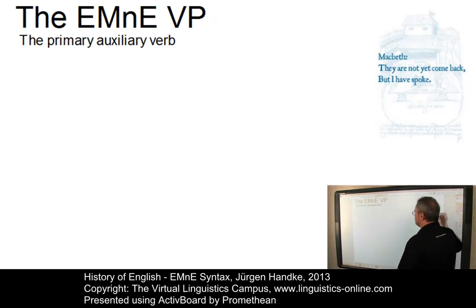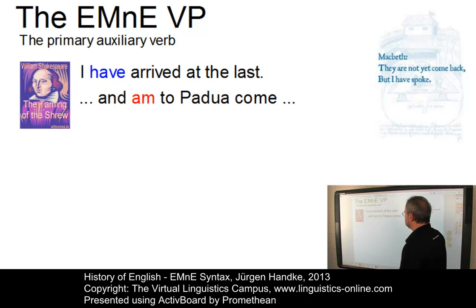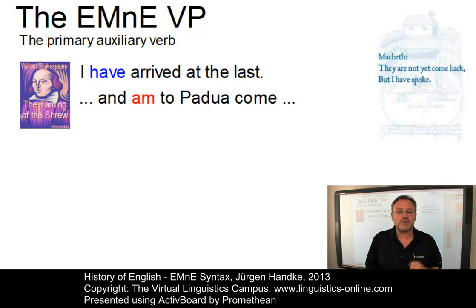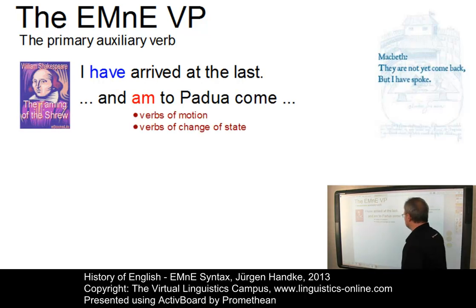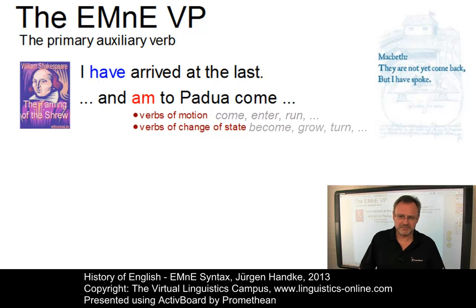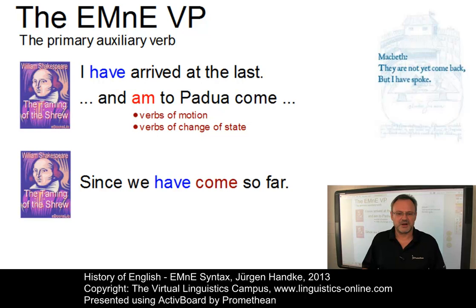Let's start with the primary auxiliary verb. In contrast to present-day English, early modern English had two auxiliary options to mark the present perfect aspect: have and be. Here are two examples from The Taming of the Shrew: 'I have arrived at last' and 'to Padua come.' The standard auxiliary for perfect forms was have. However, perfect forms with be were also used and were especially common with verbs of motion such as come, enter, and run, or verbs of change of state: become, grow, turn, etc. However, this rule was not applied consistently. Here is a counter-example: 'Since we have come so far' — here the use of have denotes a continuing process rather than the result of the action of the verb.